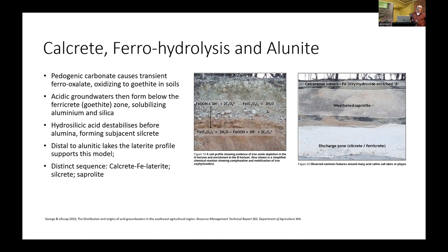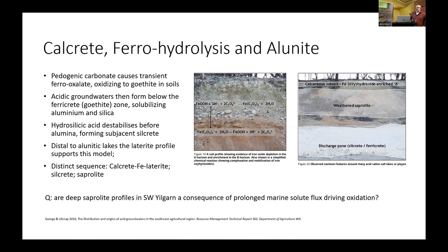The sequence is: calcrete, iron laterite, silcrete, and saprolite below it, and somewhere in there is the alunite. It's actually a small but very important part of a large amount of the soil mass around these salt lakes — some form of alunite at a percent or two, but we have an assay for it. One question I have is whether a lot of the deep saprolite profiles in southwest WA are a consequence of this system operating — is the acidity due to the saltwater flux and acidification, and does that knock out the saprolite?